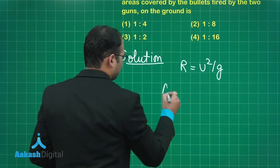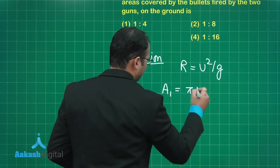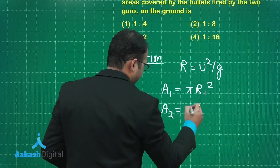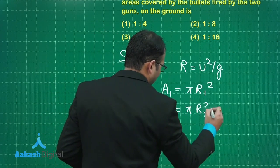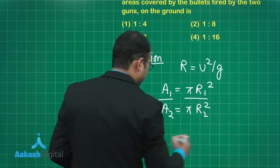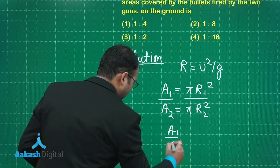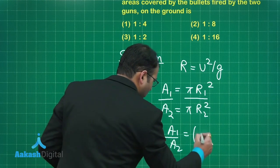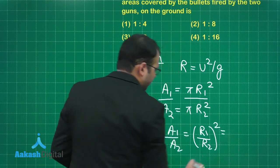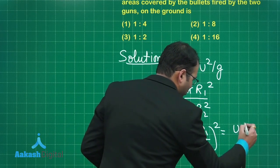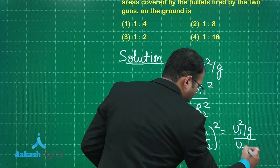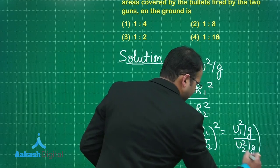Area covered by first bullet would be pi r1 squared and area covered by the second bullet would be pi r2 squared, where r1 and r2 are the ranges of these projectiles. Let's take the ratio of these. What I will get is a1 by a2 would be equal to r1 by r2 whole squared. So instead of r1 I can write u1 squared by g, here u2 squared by g, and its whole squared.